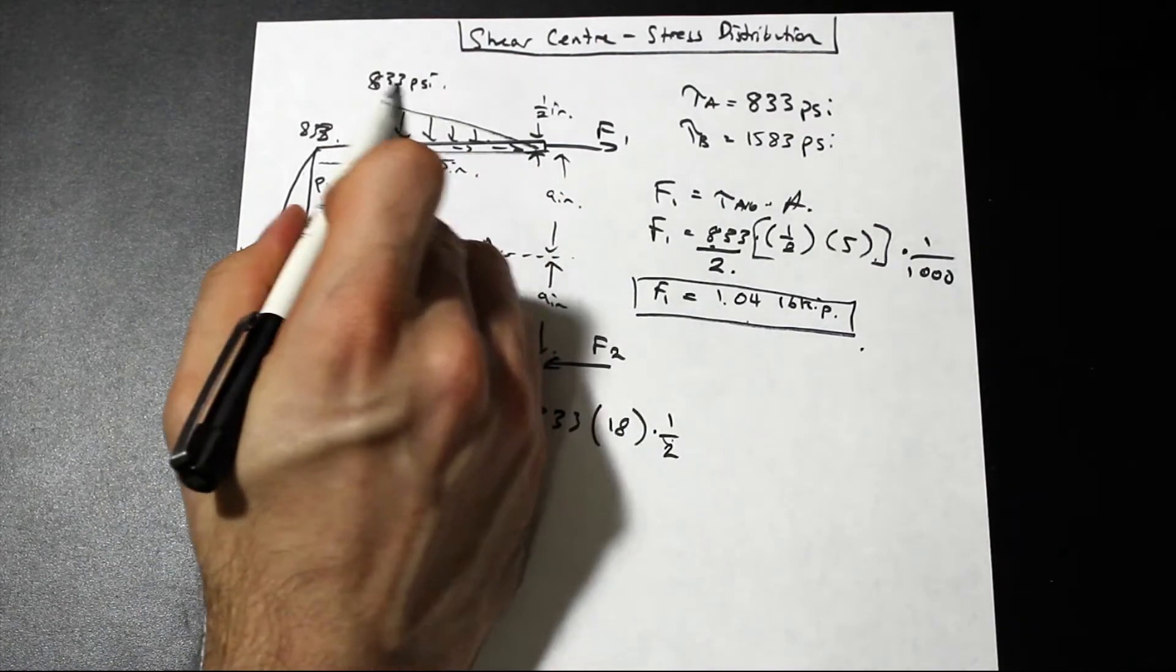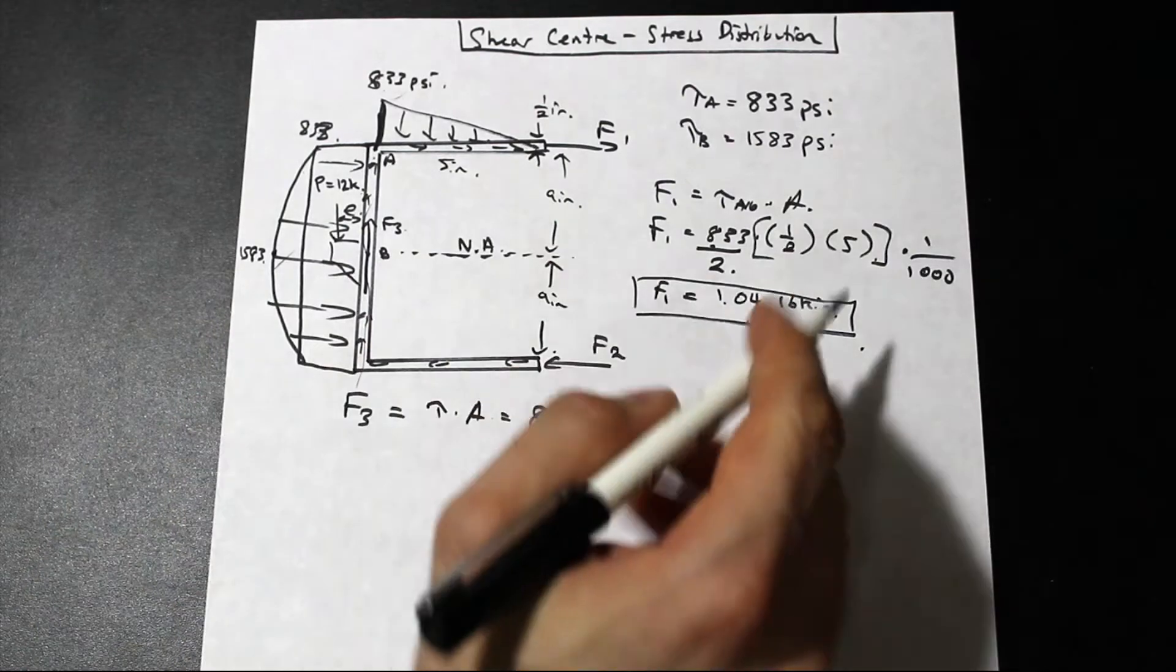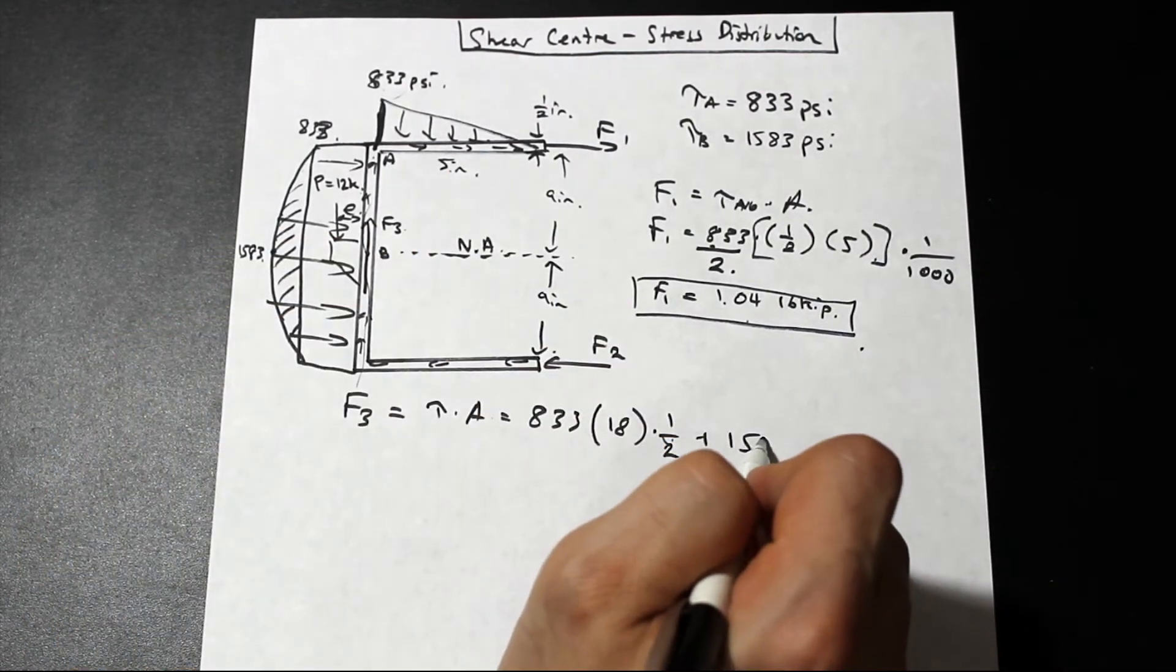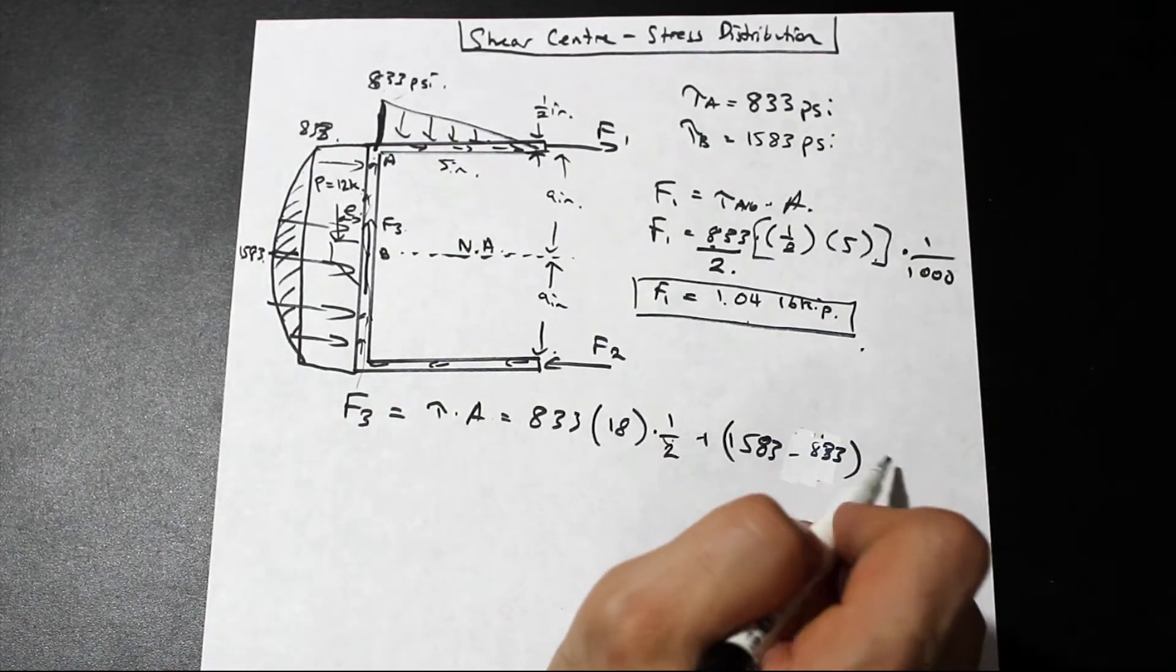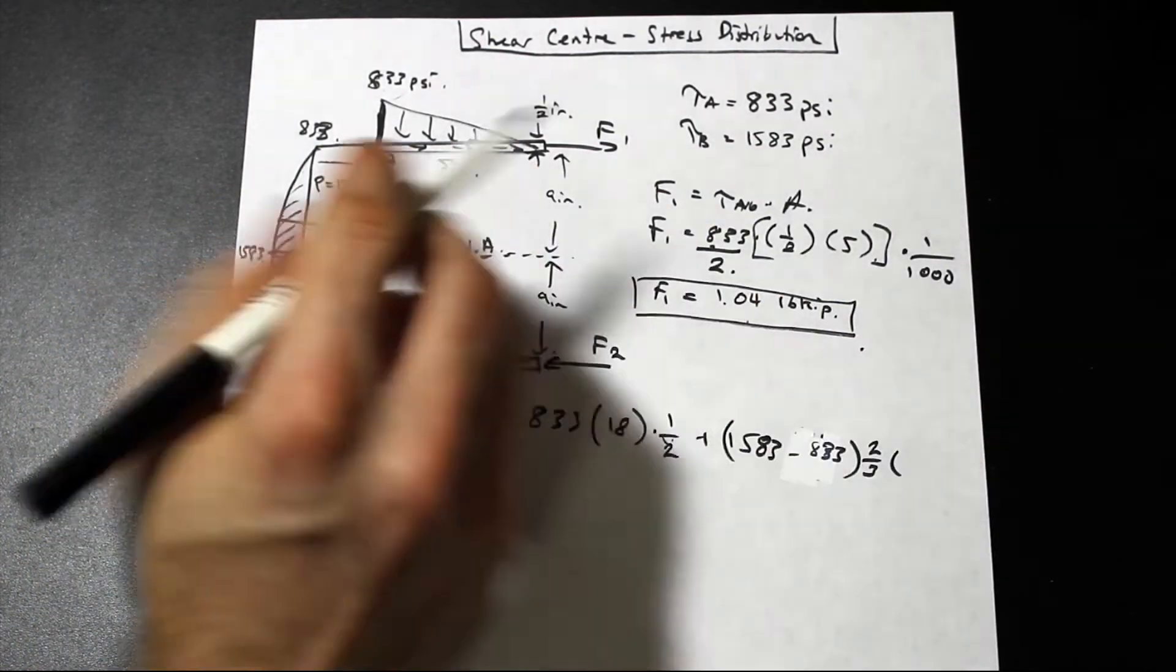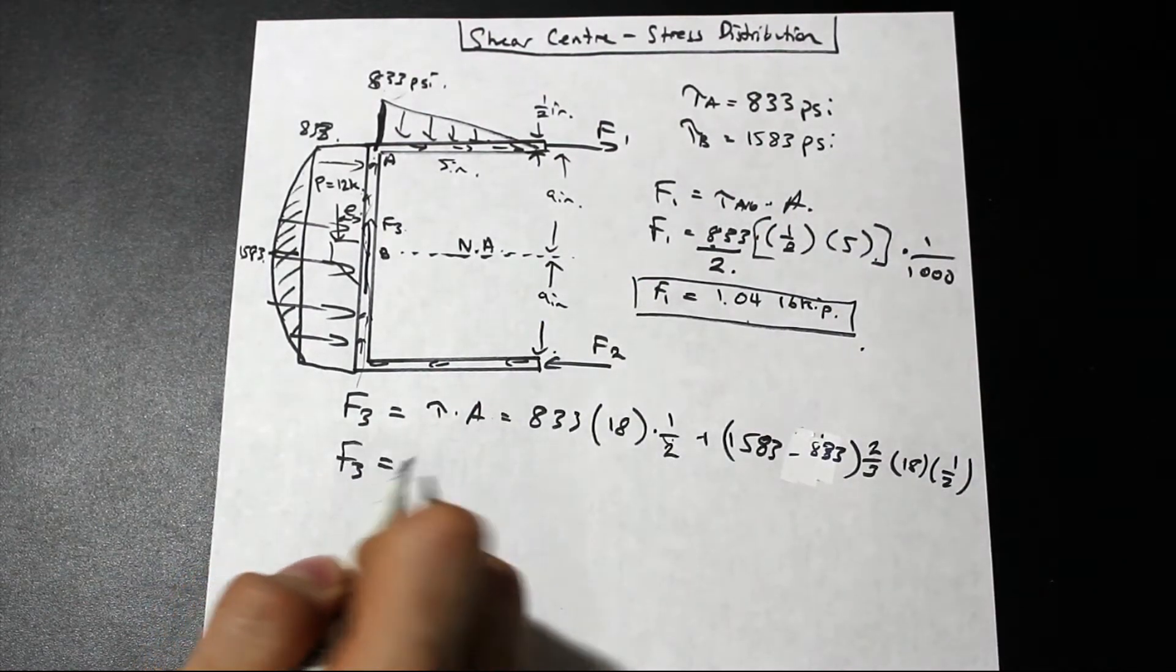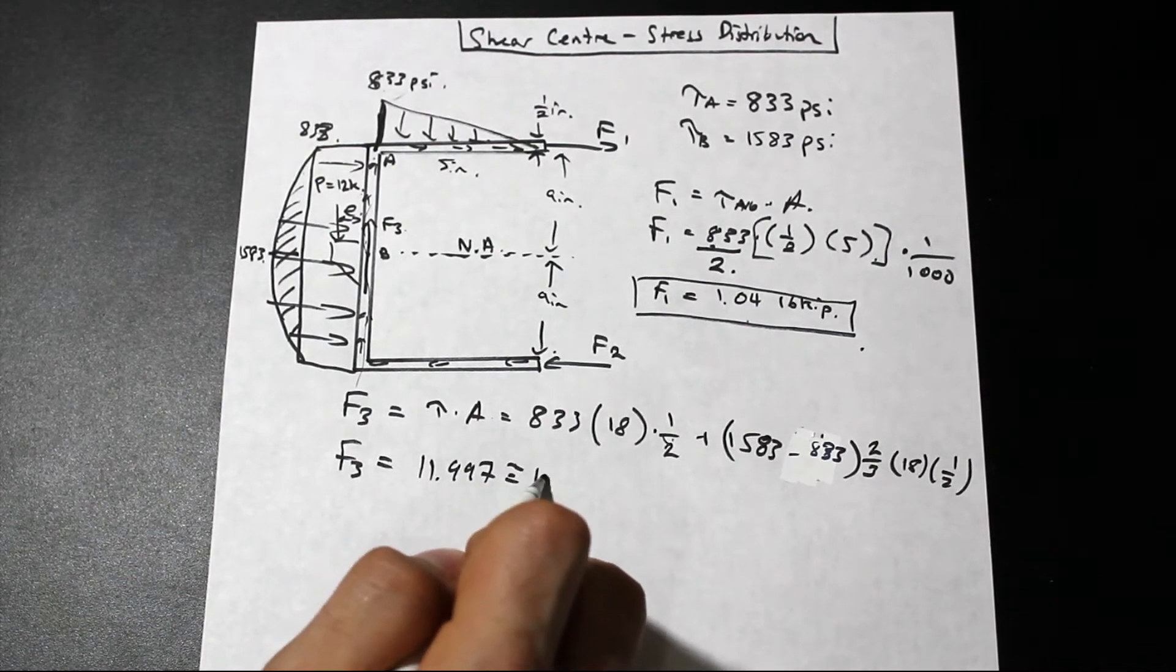So don't mistake this half for the one that we did here. This half is the thickness of the web times the length of the web times 833, and we're going to add that to this parabolic area here, okay? The parabolic area is going to be the peak here, so we have 1583 minus 833, okay? And that is going to be multiplied by two over three, because that's how we find the area of a parabola of this shape, and that is also going to be multiplied by the area of the web. So the area of the web, again, is 18 times one half inch thickness, and that is going to give us F3 of 11.997, which is equal to roughly 12 kip.